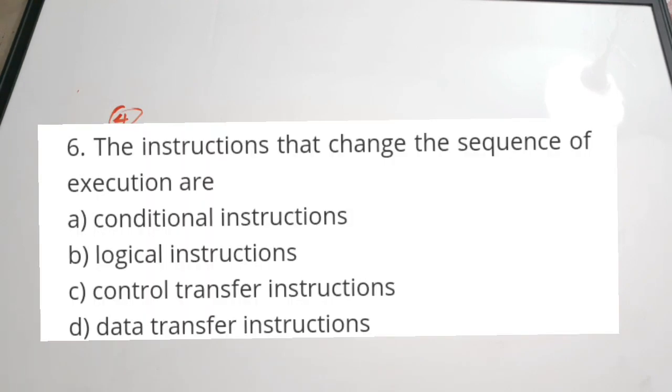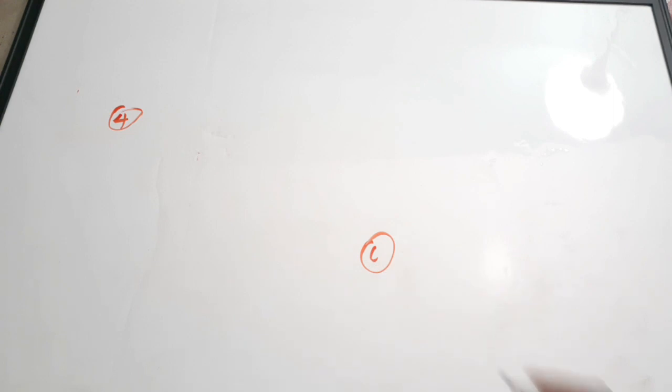Fourth question: the instructions that change the sequence of execution are — A) conditional instruction, B) logical instruction, C) control transfer instruction, D) data transfer instruction. The correct answer is option C, control transfer instructions. They transfer or change the sequence of execution, either conditionally or unconditionally.